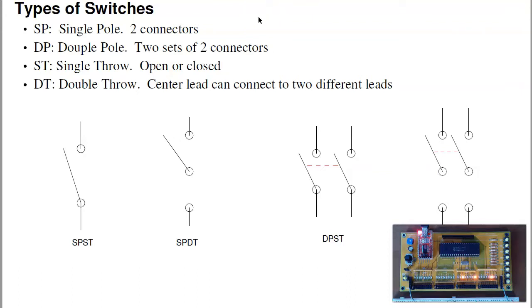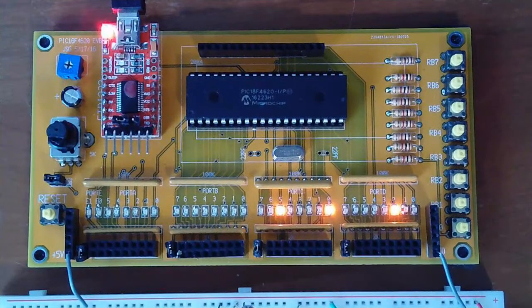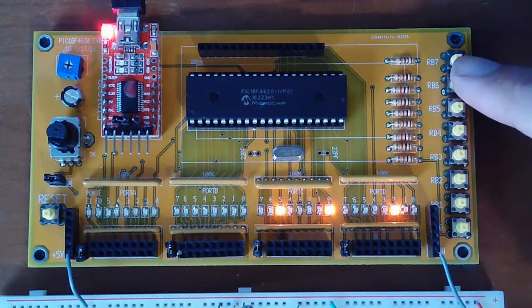There's a couple types of inputs. One of them would be the push buttons. Further on the board, you've got these buttons right here tied to port B.